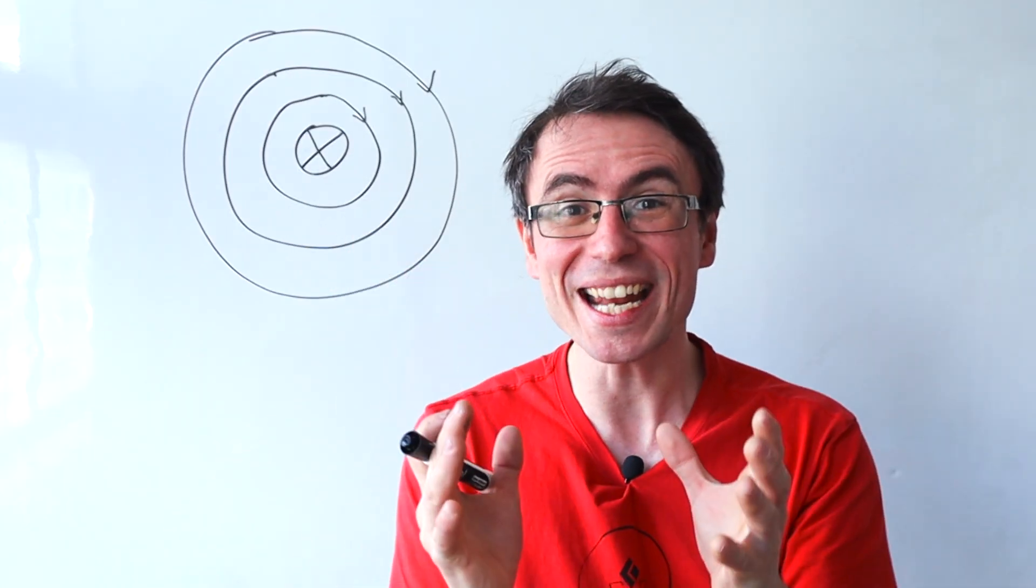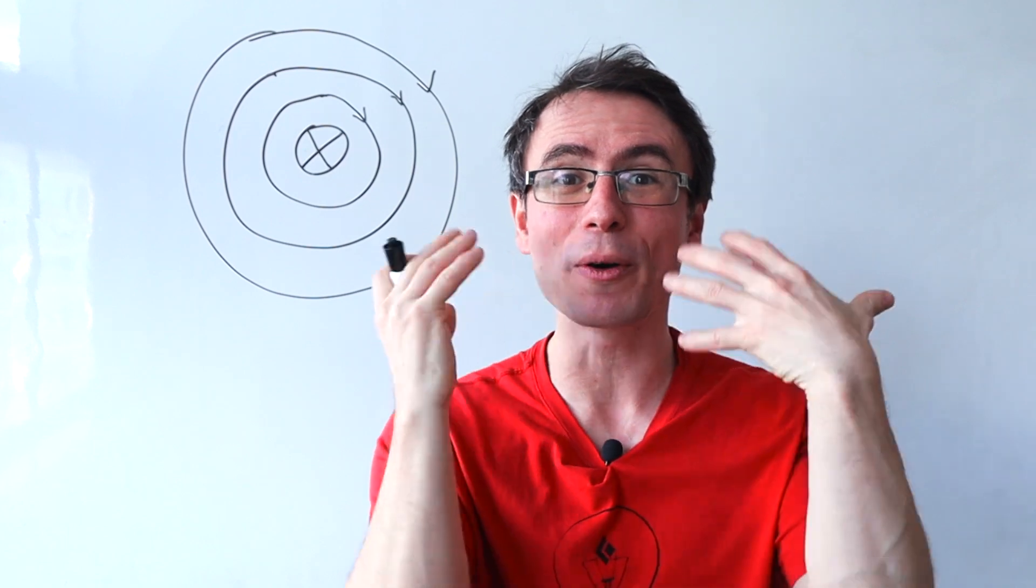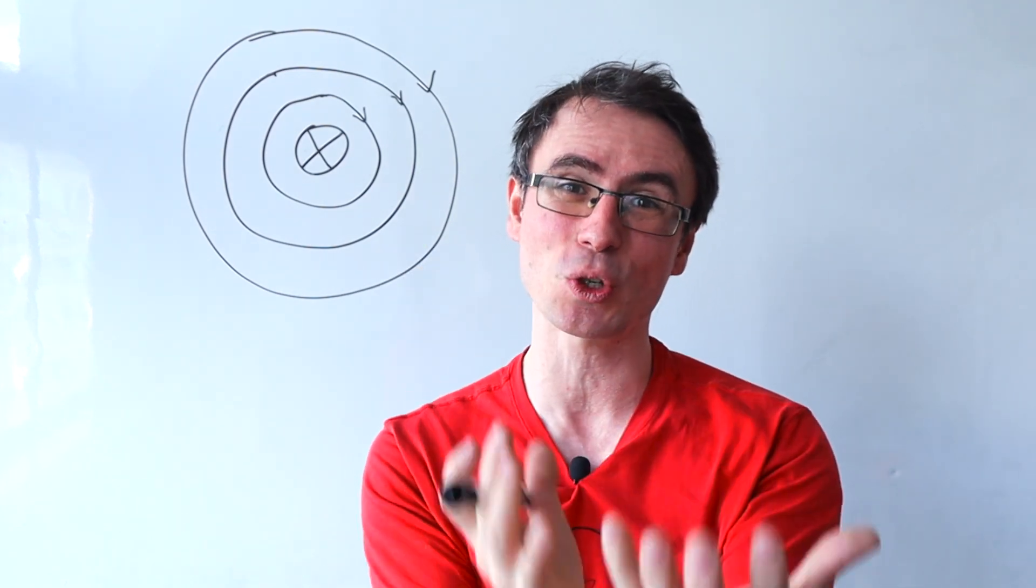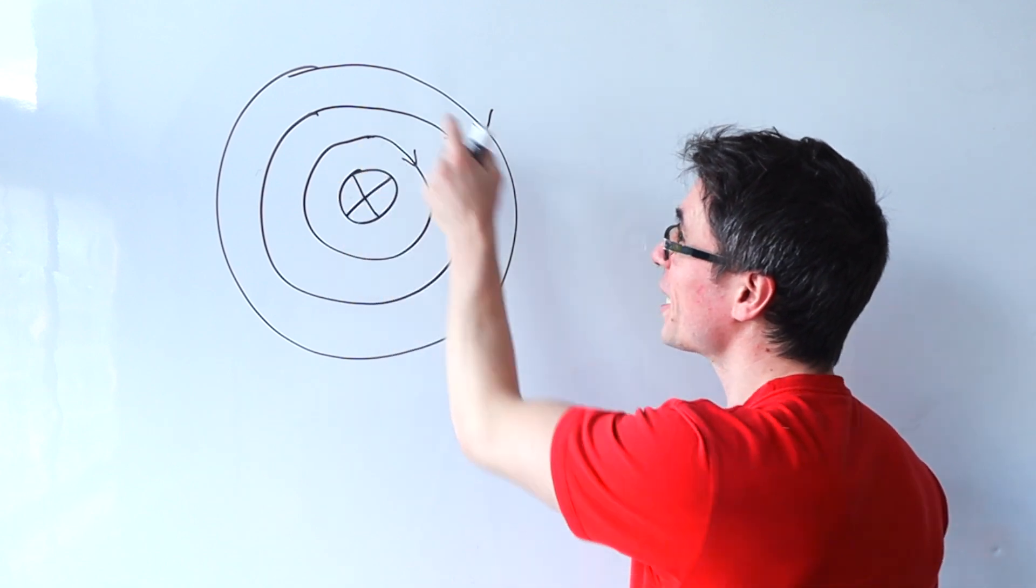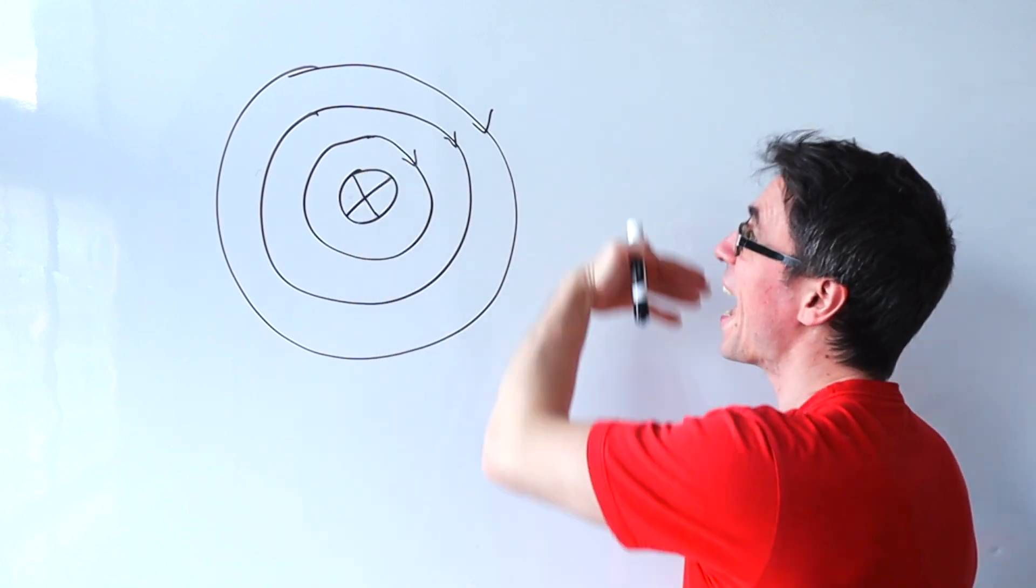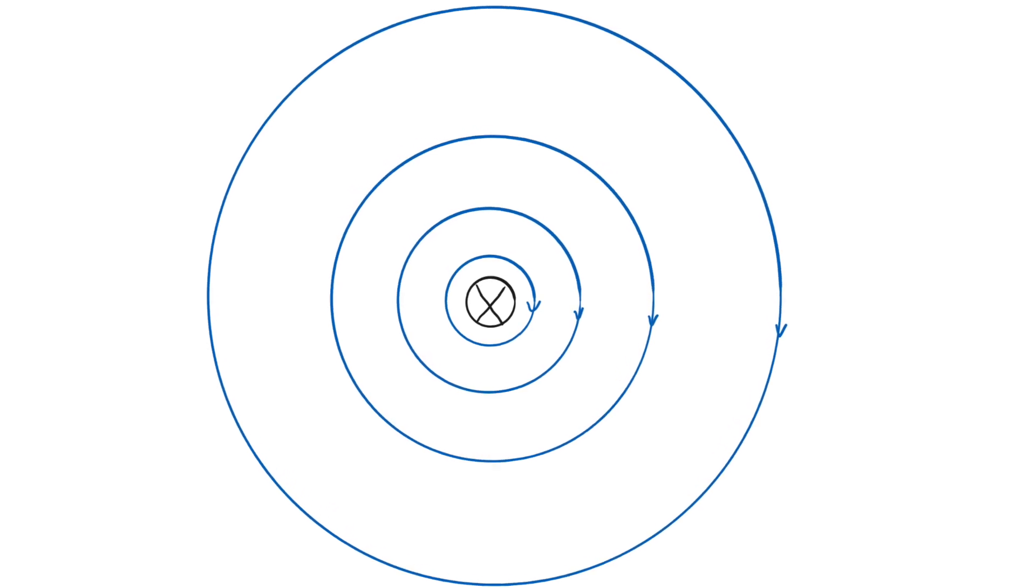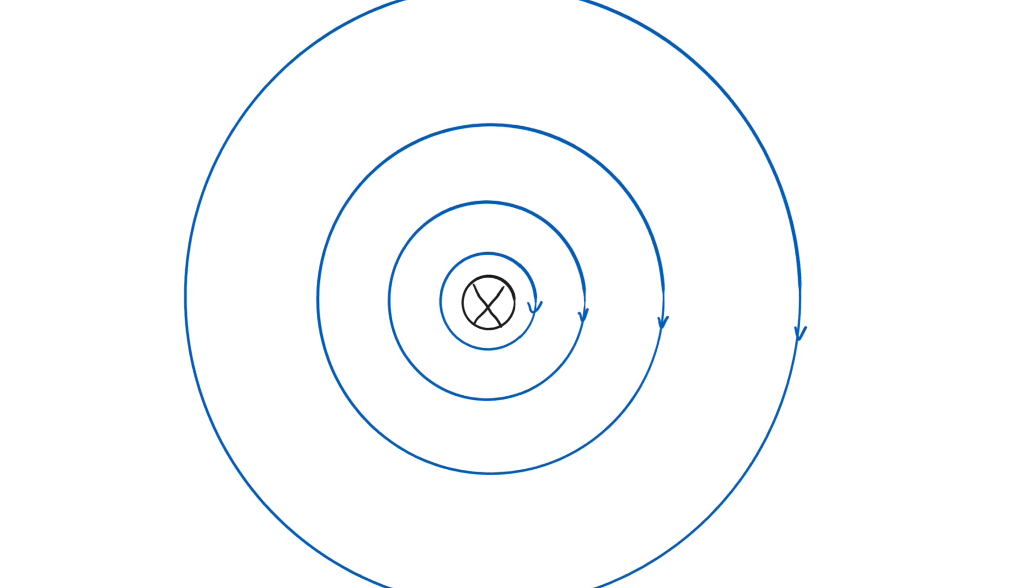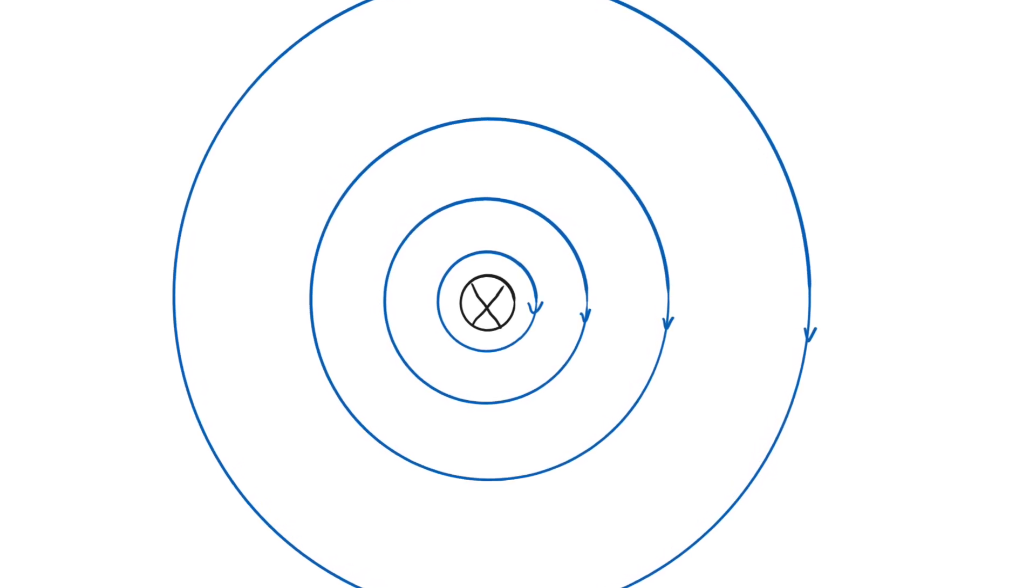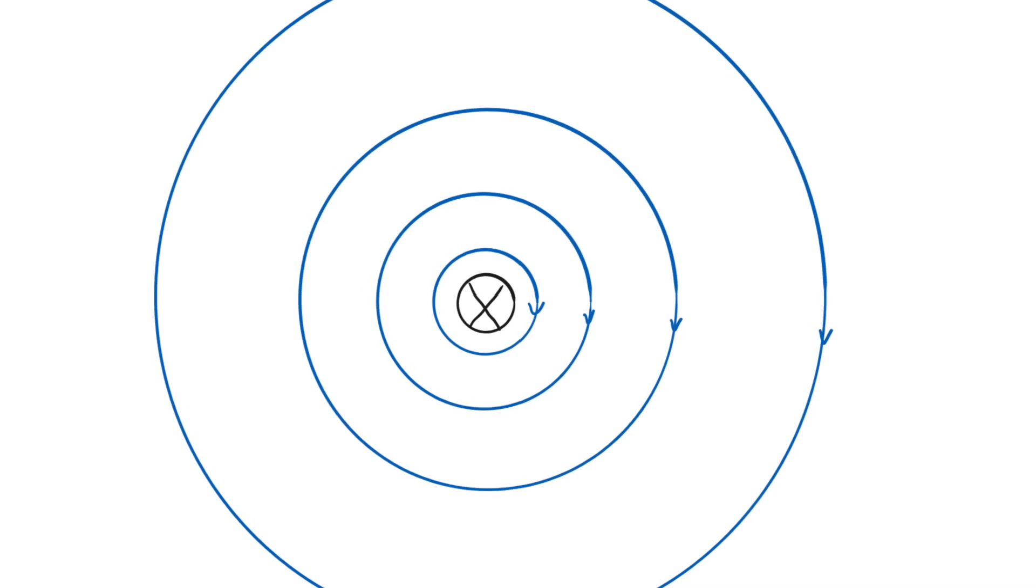The magnetic field gets weaker and weaker around the wire, so our magnetic field lines should indicate this. This means the spacing between individual field lines has to be shown to be greater. Something such as this, where the distance between the individual field lines keeps on increasing, will score two out of two.